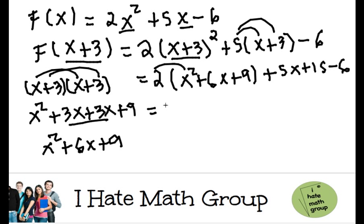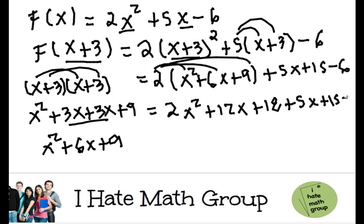Now I do 2 times x squared is 2x squared, 2 times 6 is going to be 12x, and 2 times 9 is 18 plus 5x plus 15 minus 6.